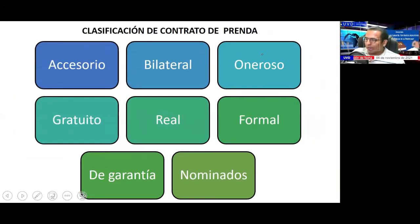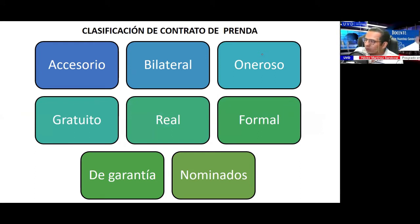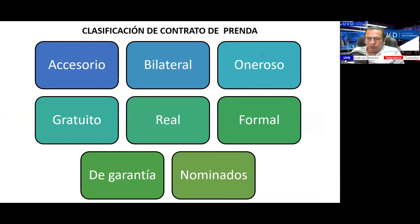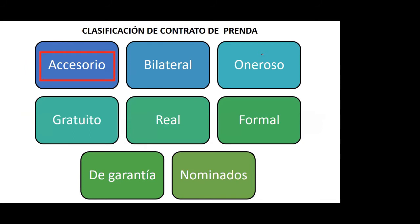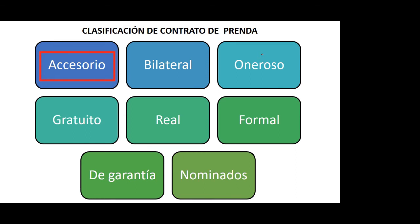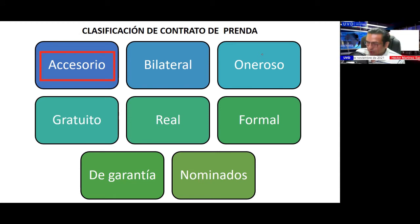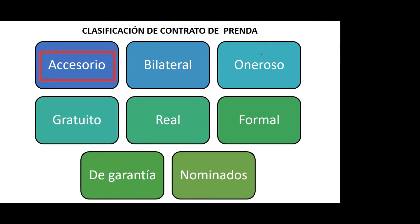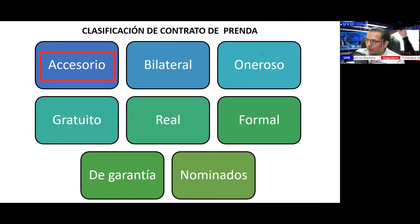The prenda is an accessory contract. Maestro Jacinto explains: it depends on a principal contract to give fulfillment to an obligation, and only if the principal is not fulfilled does the prenda become effective. For example, at the Monte de Piedad: the principal contract is a loan/pawn agreement, and only if that obligation is not met does the prenda become effective.